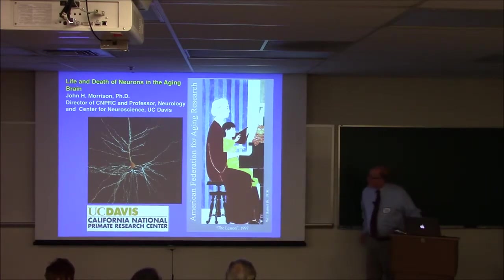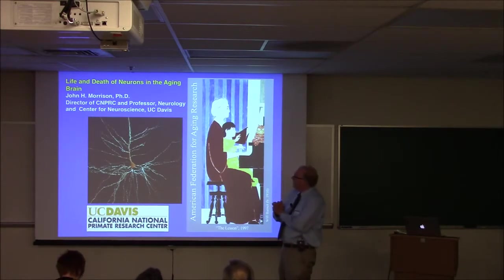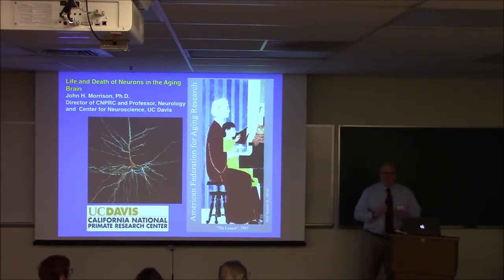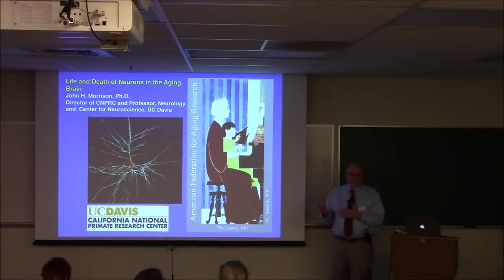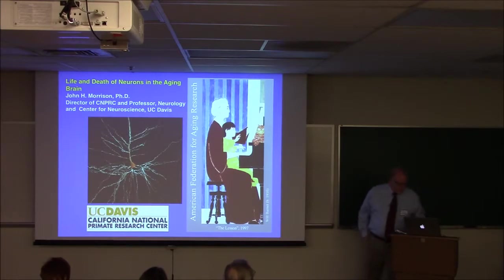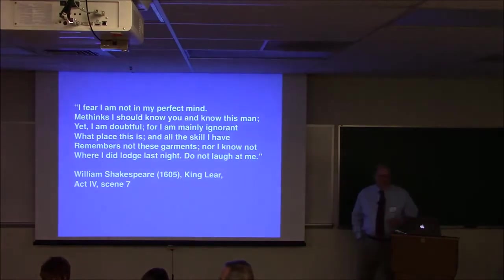So, as Cam said, I'm going to talk to you about life and death of neurons in the aging brain. And one of the major points we'll make is the distinction between cognitive aging and Alzheimer's disease, which is an area that I know everybody in this room, except perhaps that young girl there, is interested in.